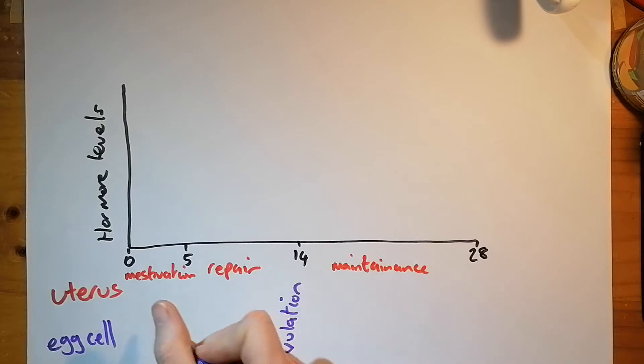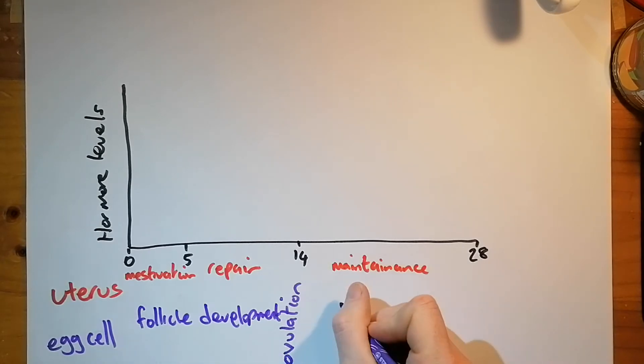And then here, in between day 0 and ovulation, you've got follicle development. And on the other side of ovulation, you've got something called the corpus luteum, which is the point in the ovary where that egg was released.